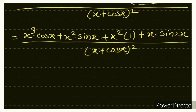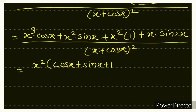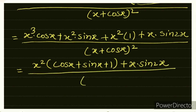So dy/dx = [x²(cos x + sin x + 1) + x·sin 2x] / (x + cos x)². This is our final answer. The sum was lengthy but easy — trigonometric identities like sin²θ + cos²θ = 1 and sin 2θ = 2 sin θ·cos θ were needed.